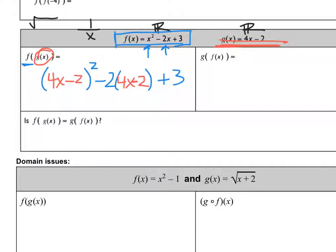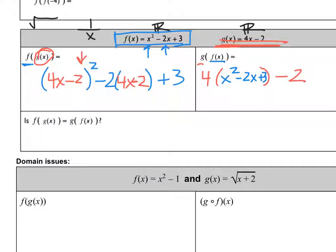Now going the other way: my outside function is g and my inside function is f of x. I write the structure of my outside function — 4(  ) minus 2 — and plug in x squared minus 2x plus 3. The bottom question asks: is f of g of x equal to g of f of x? At the very least they're not going to be the same — 4 times x squared gives 4x squared, but squaring 4x gives 16x squared. Since the squared terms don't match, they are not equal.